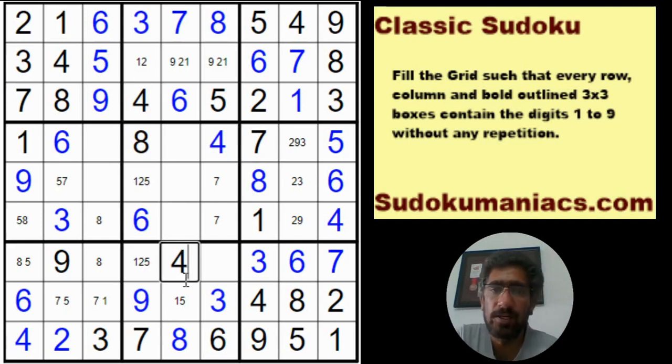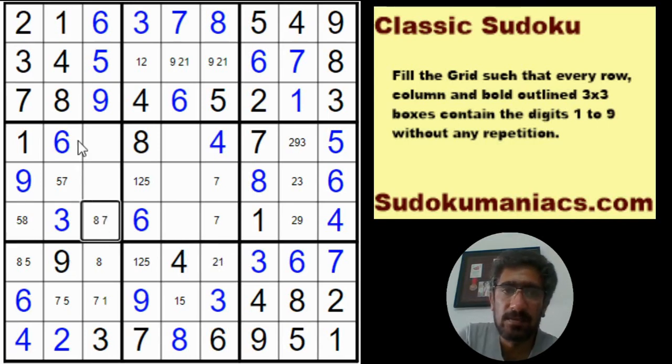This has to be a 1 and this becomes a pair of 5, 8. So here I get a 7 and a 1. And again this would be a 5 and a 7.